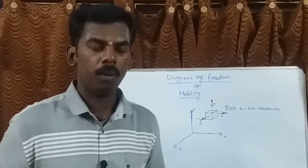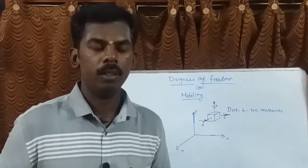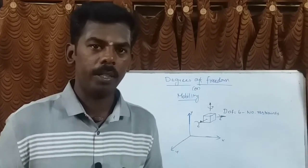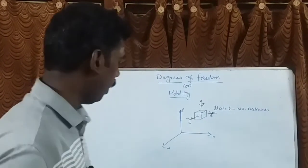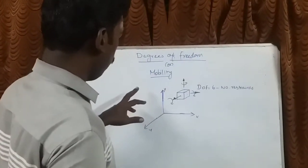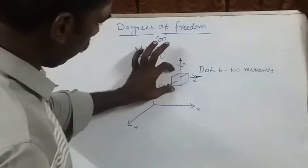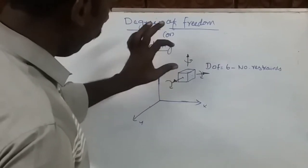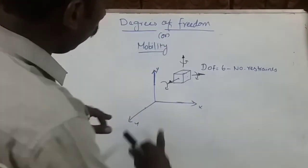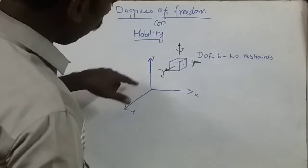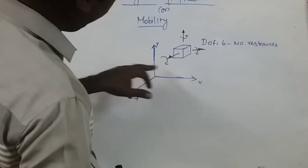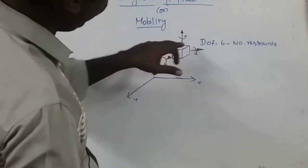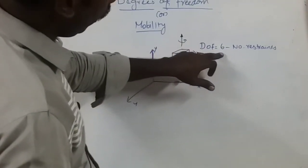Today we discuss degrees of freedom of a pair, defined as the number of independent motions — both translational and rotational. Consider an unconstrained rigid body moving in space; it can translate and rotate along any three mutually perpendicular axes X, Y, and Z. So the degrees of freedom equals six.